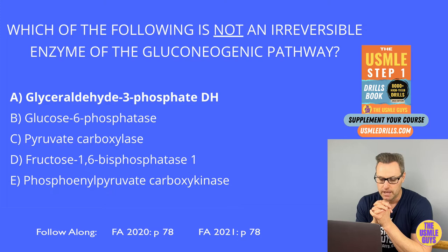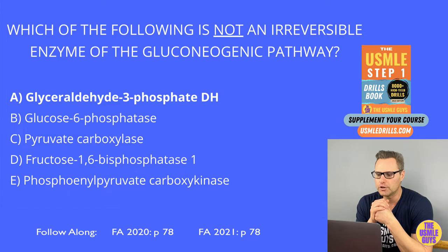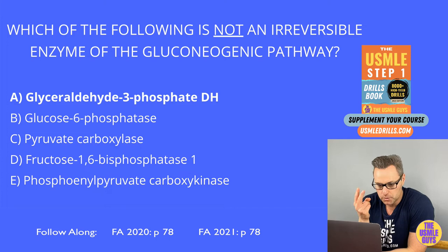Fructose-1,6-bisphosphatase is another cytosolic enzyme, and its job is to convert fructose-1,6-bisphosphate into fructose-6-phosphate. Remember, this is activated by citrate, and inhibited by two things: AMP and fructose-2,6-bisphosphate.